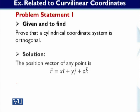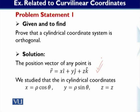Now let's move on to our solution. The position vector of any point is r = xi + yj + zk. We will substitute the cylindrical coordinate expressions into this position vector. In the cylindrical case: x = rho cos(theta), y = rho sin(theta), and z = z.